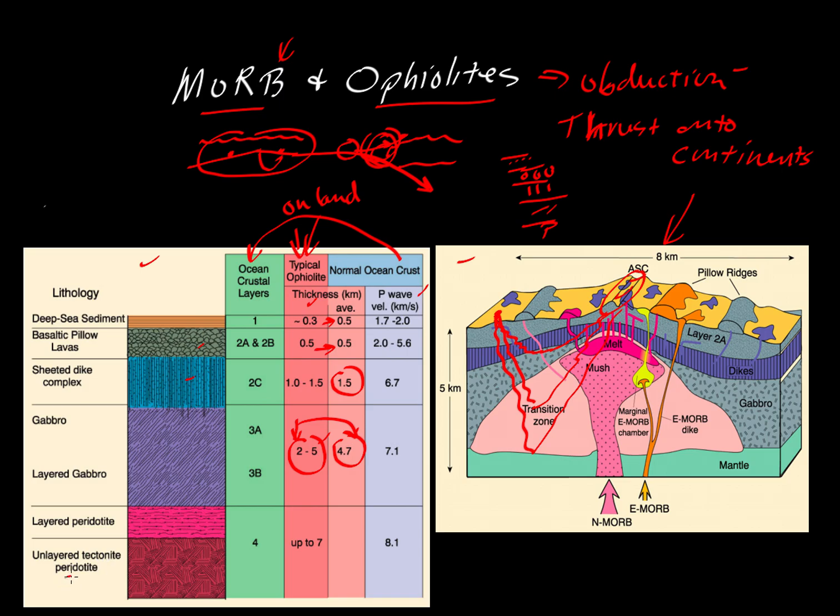Part of the reason that we don't see complete thicknesses is this stuff is being tectonized. Notice here that we have peridotite that's being qualified with the adjective tectonite, and then we have a so-called layered peridotite. Where do those layers come from? This stuff is being stretched and pulled due to the obduction forces that are pushing this material onto the land. So it gives us these textures of layered gabbro, layered peridotite, and in some cases, we have unlayered but still tectonized peridotite. That is related to the tectonic forces that are causing emplacement.